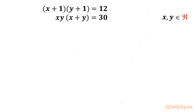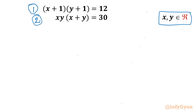Welcome to Infigyan friends. Today in this video we are going to take up one very interesting system of equations. We have (x+1)(y+1) = 12 as the first equation, and the second equation is xy(x+y) = 30. We have to find out the real solutions. I will showcase two different methods — two different approaches — to solve this problem. Let me call these equation 1 and equation 2, and this first approach is method number 1.